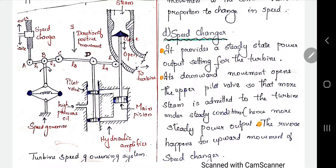There are mainly four components in this system. The first one is the flyball speed governor. The second one is the hydraulic amplifier. The third one is the linkage mechanism. And the fourth one is the speed changer.